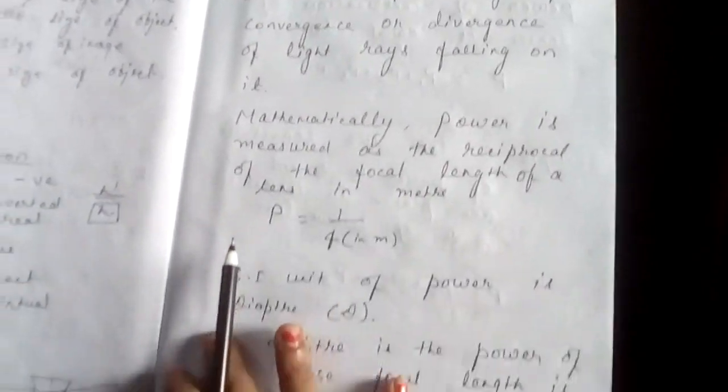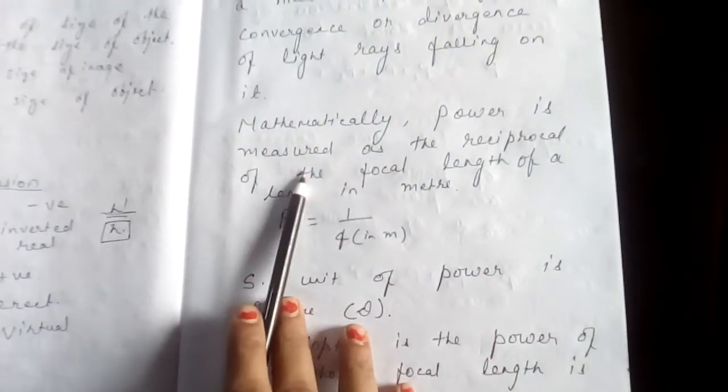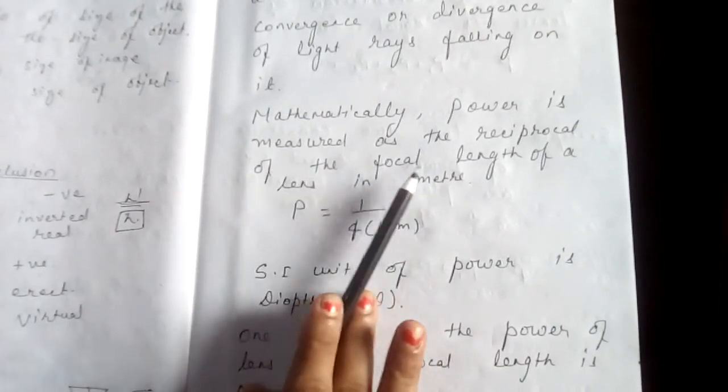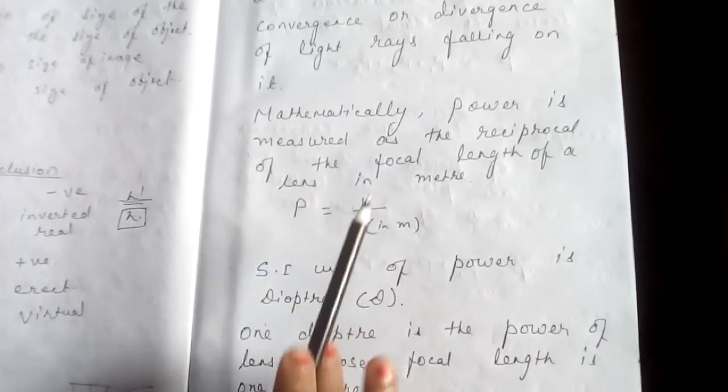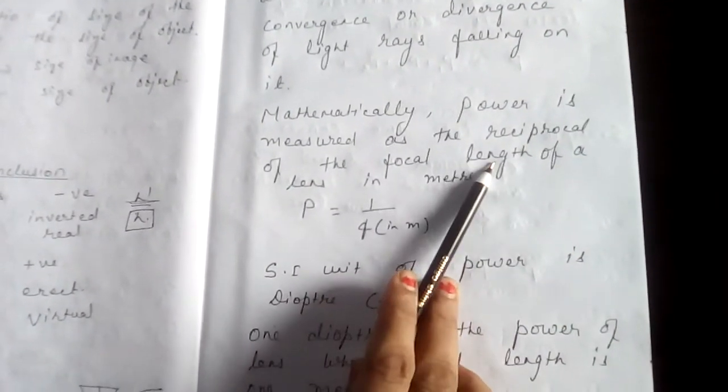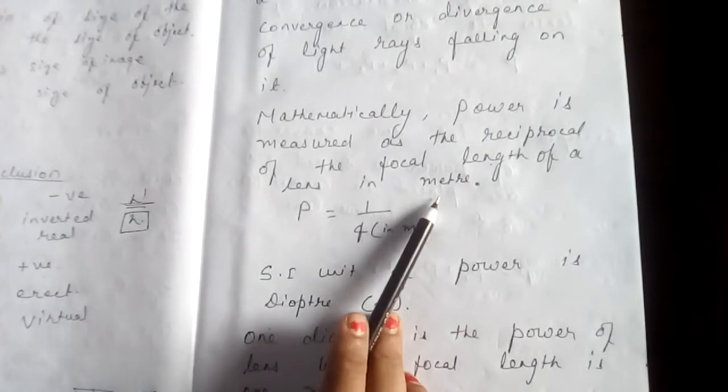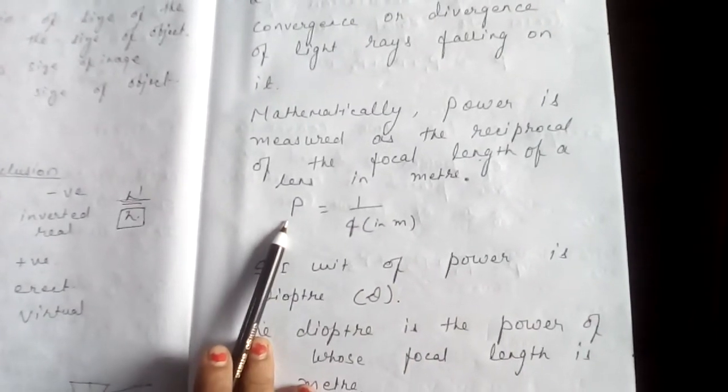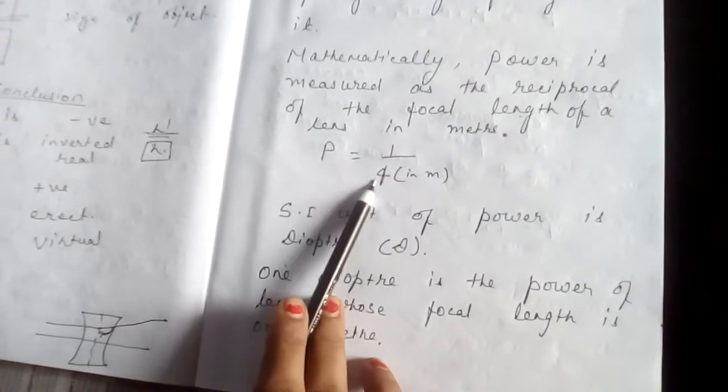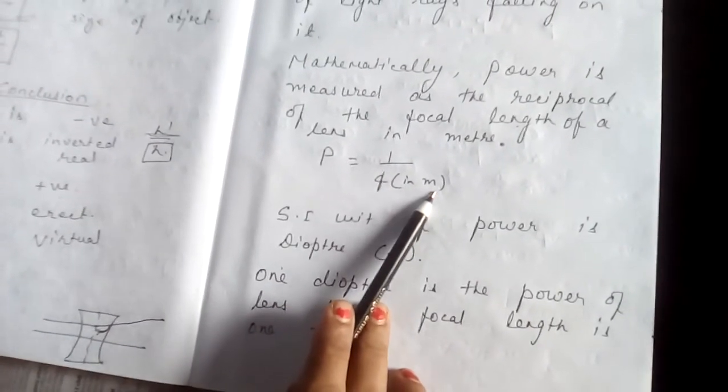Mathematically, power is measured as the reciprocal of the focal length of lens in meter. Remember students, focal length should always be in meter when we are discussing power. So, we are writing power is equal to 1 by F, and focal length should be in meter.